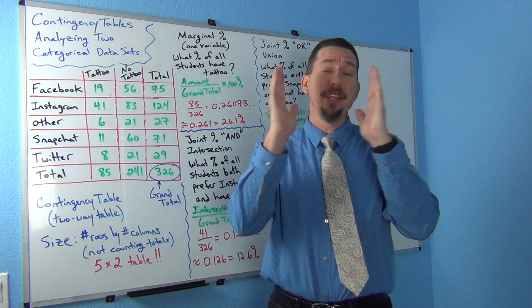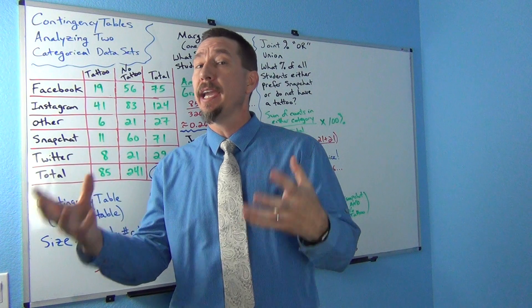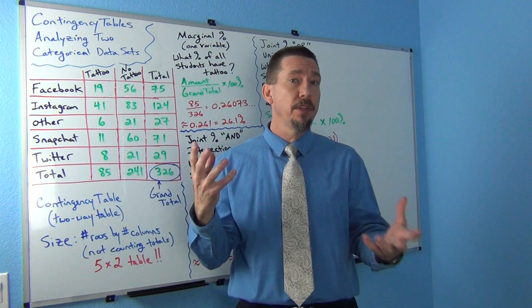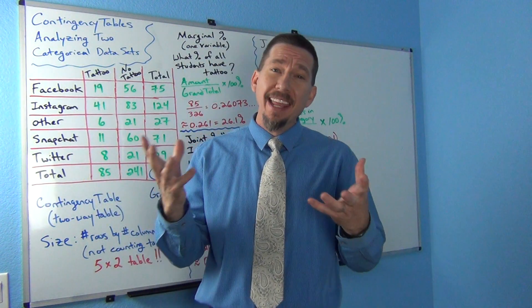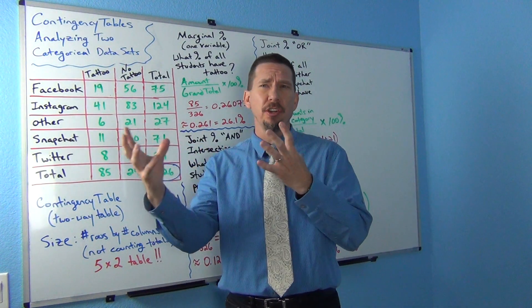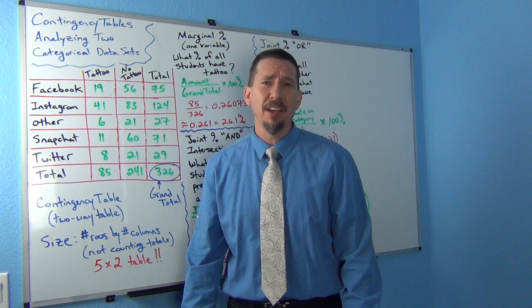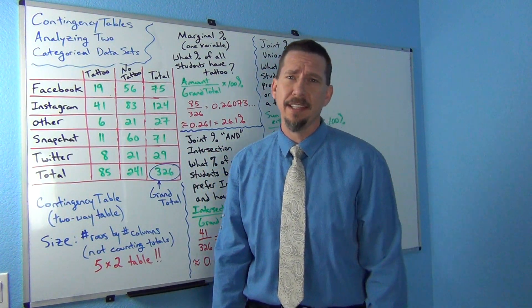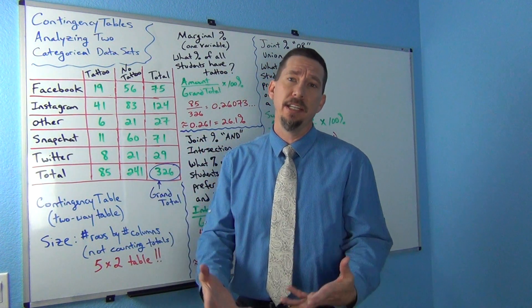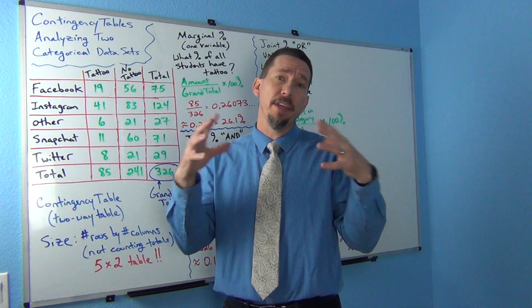Hi everyone, this is Matt Tuchot, intro stats. Today we're looking at analyzing two different categorical data sets. When you have two different categorical variables, or you've asked people two different categorical questions, you want to analyze how much they are related. The first thing we want to create is something called a contingency table.